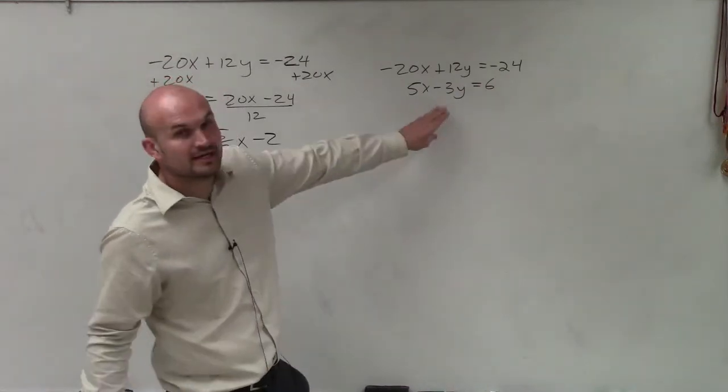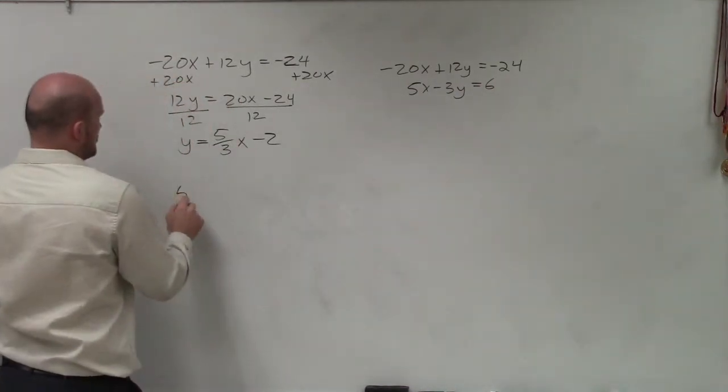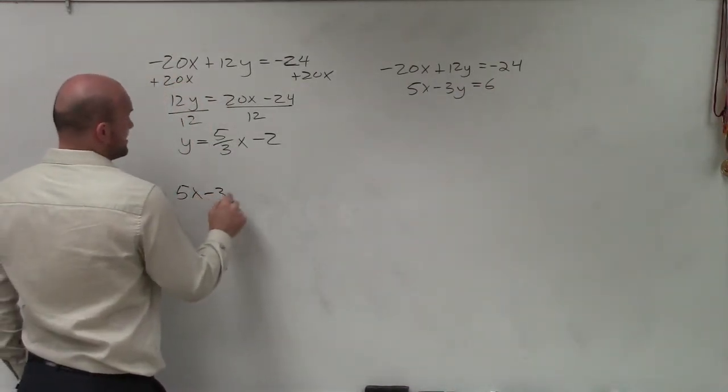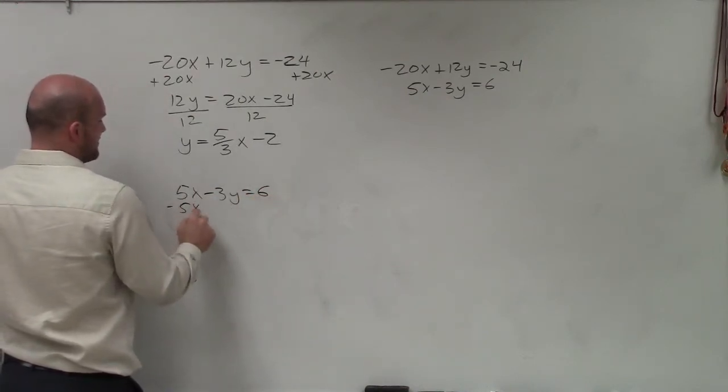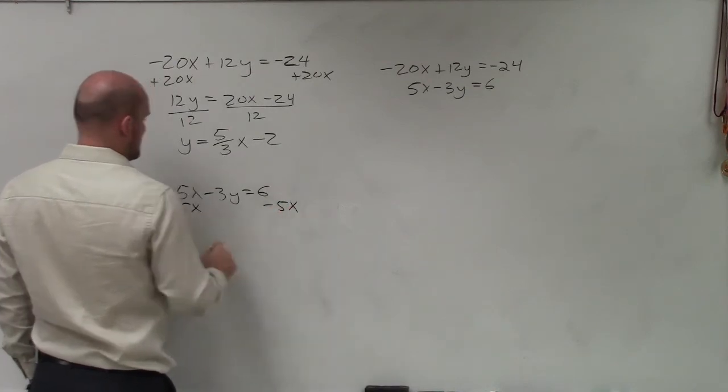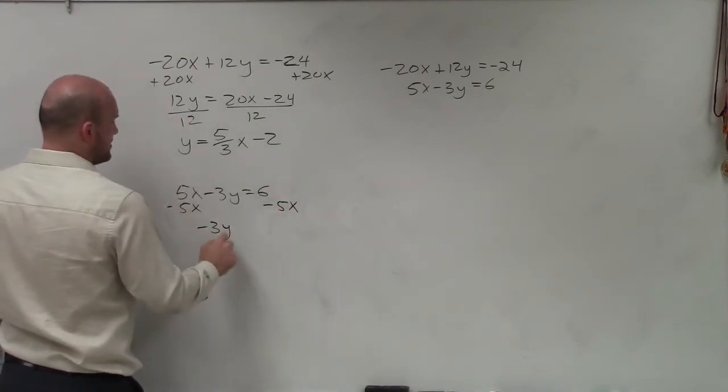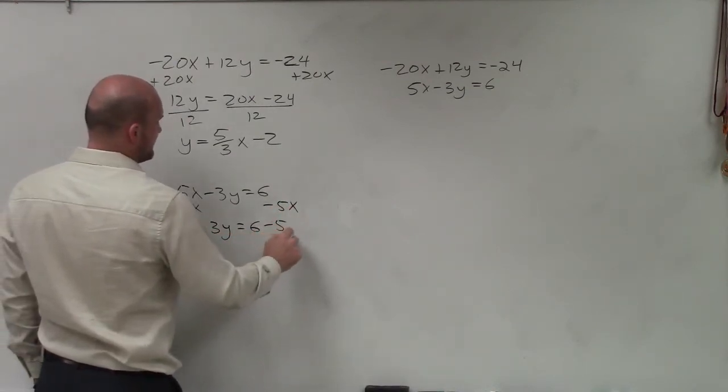Now let's go ahead and put this equation into slope intercept form. 5x minus 3y equals 6. So again, we need to isolate the x, so I'll subtract the 5x. And therefore, I have a negative 3y equals 6 minus 5x.